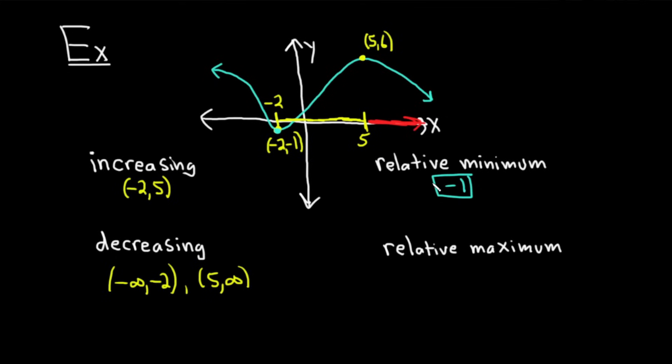You could write the ordered pair. You could say it occurs at negative 2, negative 1. Different books will ask slightly different questions. Some books will say, what is the relative minimum? In that case, it's negative 1. And they'll ask, where does it occur? So sometimes they'll want just the x coordinate, or they'll want the ordered pair. So it occurs at negative 2, negative 1. And it is negative 1. Because you have this little dip. It's the smallest y value.